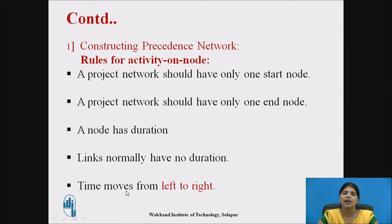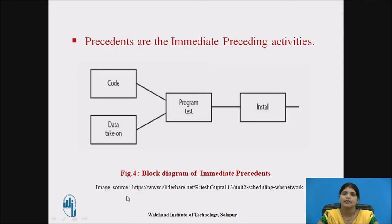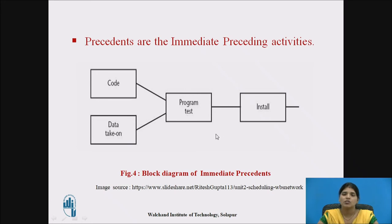Time moves from left to right. The next rule is that precedences are the immediate preceding activities. For example, program test cannot start until the code and data takeon have been completed, and install cannot start until the program test has been completed. So code and data takeon are the precedences of program test, and program test is the precedence of install. This is the block diagram of immediate precedence.